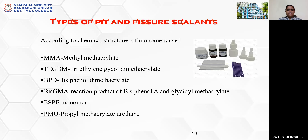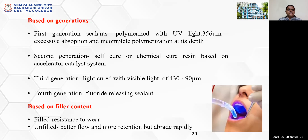The types of fissure sealants according to the chemical structures of the monomers used include: methyl methacrylate–triethyleneglycol dimethacrylate; bisphenol dimethacrylate; the reaction product of bisphenol A and glycidyl methacrylate, that is BisGMA; ESPE monomer; and propyl methacrylate urethane.